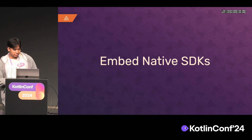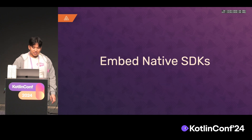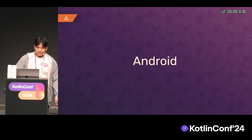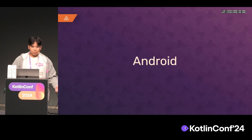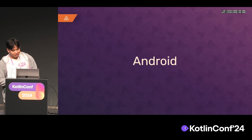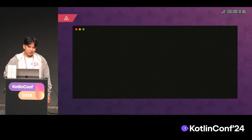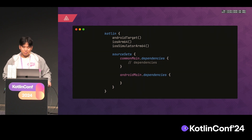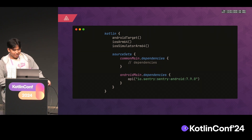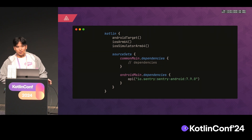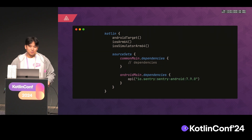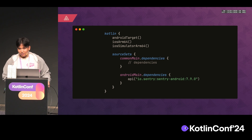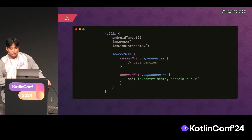The first step is the native SDKs. For Android, this is pretty easy — I think almost everyone here will know how to do that. You go into your build file and add it to your Android main dependencies, and that's it. Then you can use the SDK library in your Android main source set.